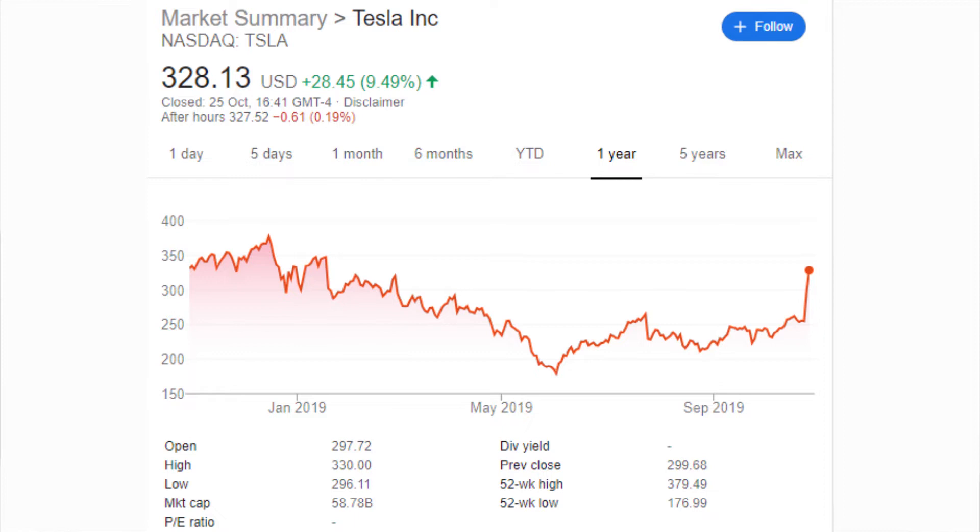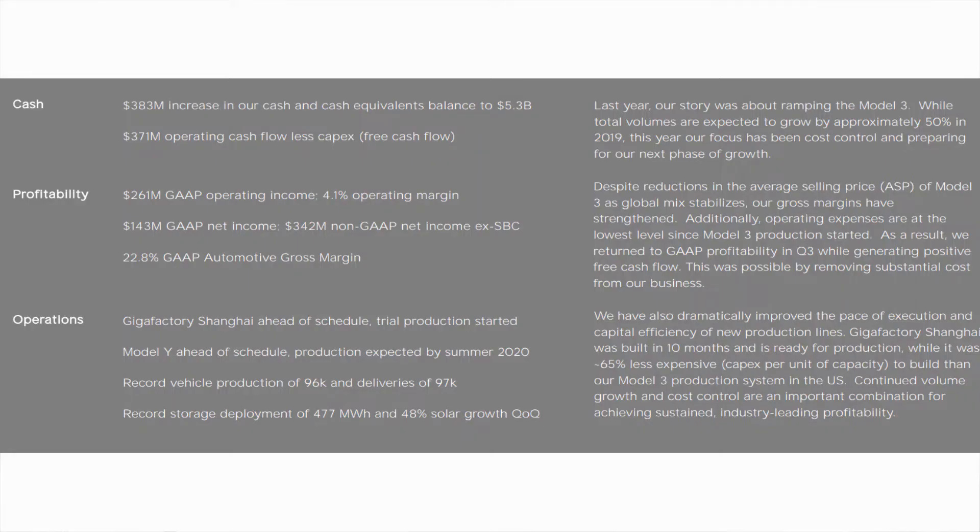Now the actual Q3 report, there's some really good information here and I've tried to just pick out some of the highlights from it. Because of the EPS beat we actually had Tesla increase their cash. Only a few months ago people were talking about Tesla not having enough cash and they increased their cash by $383 million which now gives them a balance of $5.3 billion which is fair to say is a pretty healthy balance.